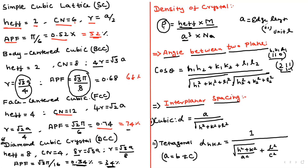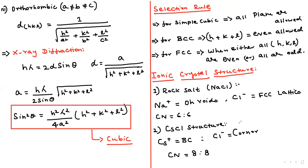They also ask about the angle between two planes, for example between (110) and (211). The formula is: cos θ = (H₁H₂ + K₁K₂ + L₁L₂) / [√(H₁² + K₁² + L₁²) · √(H₂² + K₂² + L₂²)]. Using this formula, you can find the angle between two Miller index planes.